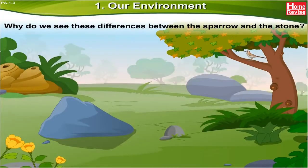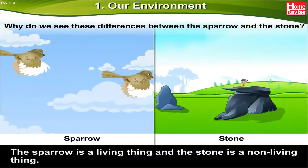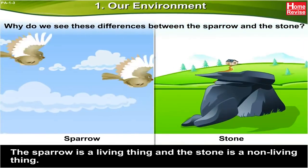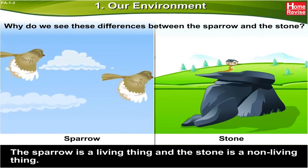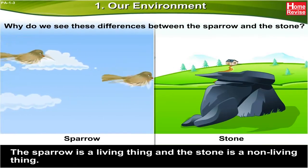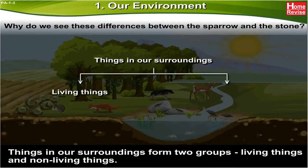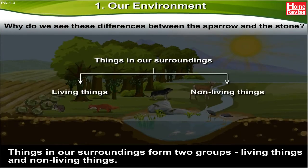Why do we see these differences between the sparrow and the stone? The sparrow is a living thing and the stone is a non-living thing. Things in our surroundings form two groups: living things and non-living things.